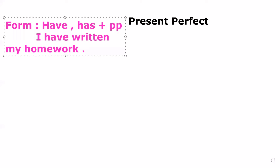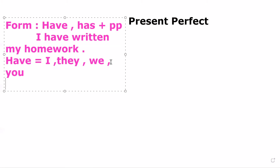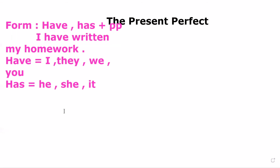'I have written' — 'have' plus the third form of the verb — tells me this is present perfect. Now, 'have' goes with which subjects? With 'I', 'you', 'we', 'they'. And 'has' goes with 'he', 'she', 'it'.